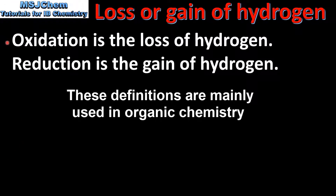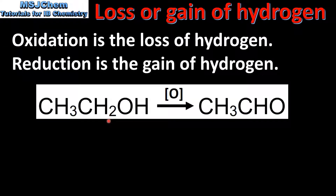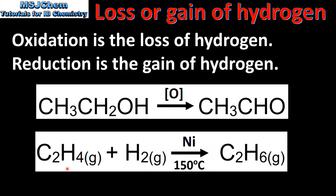Oxidation is the loss of hydrogen and reduction is the gain of hydrogen. In this reaction ethanol is oxidized using a suitable oxidizing agent to form ethanal. In our second example, ethene is reacting with hydrogen to form ethane. The ethene is gaining hydrogen, therefore this is reduction.